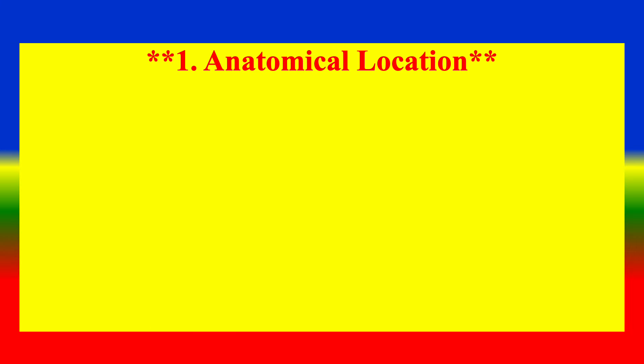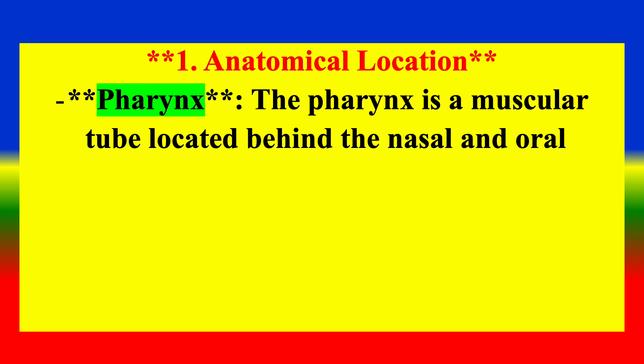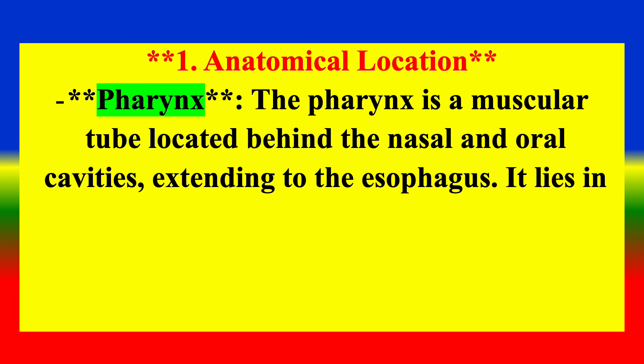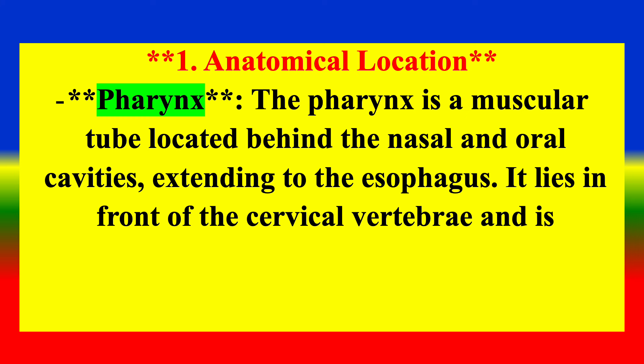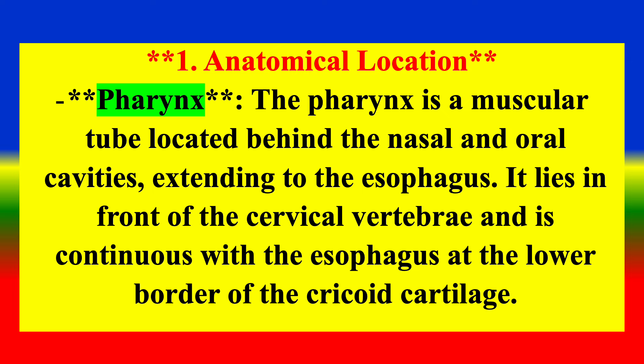Anatomical location — Pharynx: The pharynx is a muscular tube located behind the nasal and oral cavities, extending to the esophagus. It lies in front of the cervical vertebrae and is continuous with the esophagus at the lower border of the cricoid cartilage.